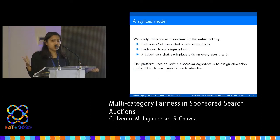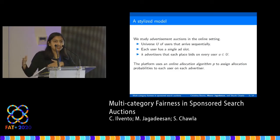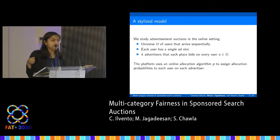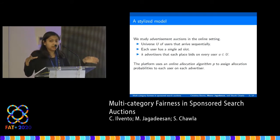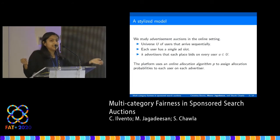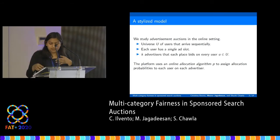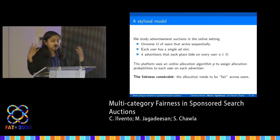We consider a simple stylized model where users arrive to the platform sequentially in an online fashion. Each user has a single ad slot and advertisers are placing bids on every user as the user arrives. The goal of the platform's allocation algorithm is to figure out how to divide up this slot between the advertisers — that is, the platform assigns each advertiser a potentially zero or non-zero allocation probability for every user for every slot. Fairness in this setting means we want the allocation to be fair across different users.